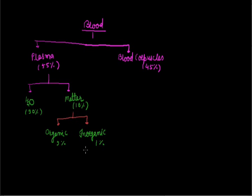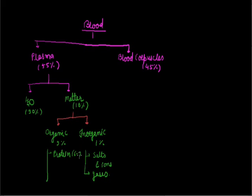The organic content makes up 9% of this material and the remaining 1% is inorganic. In the 1% inorganic part we can include salts, ions, and gases present in blood like O2, CO2, and ammonia. In the organic part, the maximum — approximately 6–7% — is made up of proteins such as albumin, globulin, fibrin, and thrombin, while the remaining 2–3% is made up of various substances like carbohydrates, fats or lipids, vitamins, hormones, and excretory products.